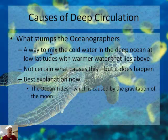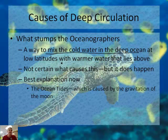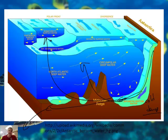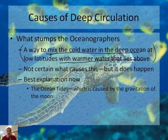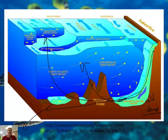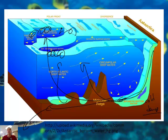The problem is they don't have a way to explain mixing of cold water in the deep ocean at low latitudes with the warmer water that lies above. This has to happen because the water flowing deep can't disappear — it eventually has to come up somewhere. That's the big question oceanographers struggle with. As of 2010, the best explanation is that it has to do with the tides. Ocean tides, caused by the gravitation of the Moon, cause some mixing on the surface of the ocean, which is what drives this upwelling.